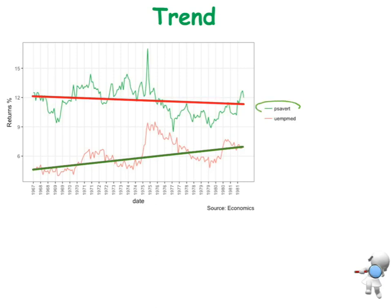With the green data, the trend is decreasing — so a decreasing trend. Whereas with the red data, we've got an increasing trend. That's the comment we want to be able to write.